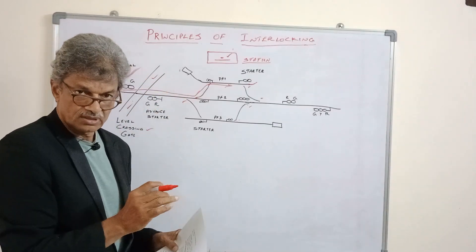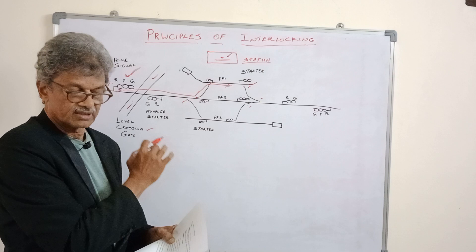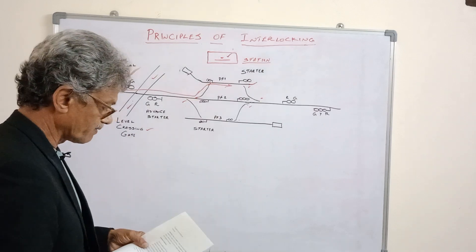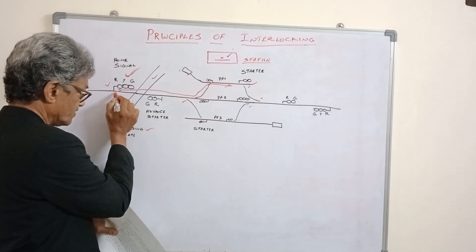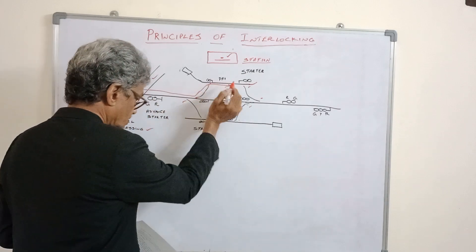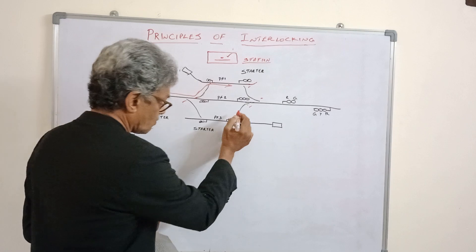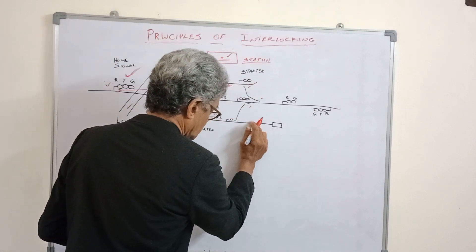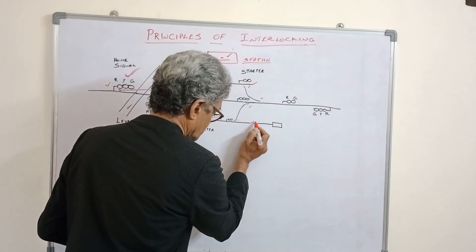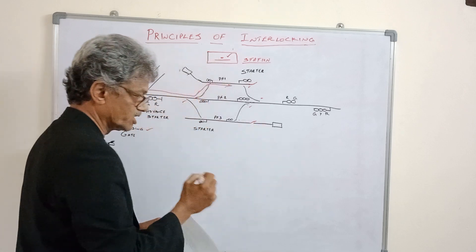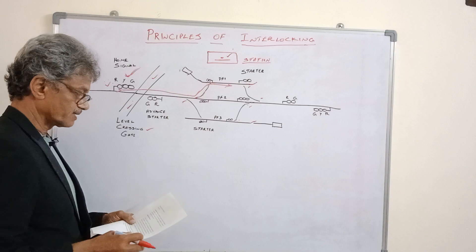The level crossing gate should be closed against the road traffic, not against the rail traffic. It should be closed against the road traffic on the route on which the train will travel, including the overlap. Some overlaps will extend beyond the signal. So all these things should be arranged in a proper sequence.